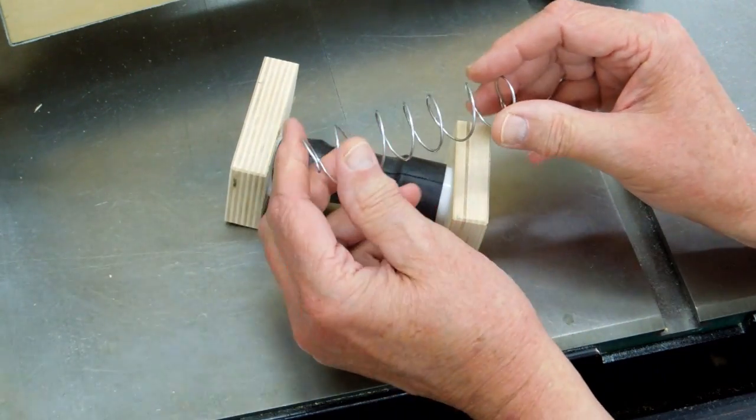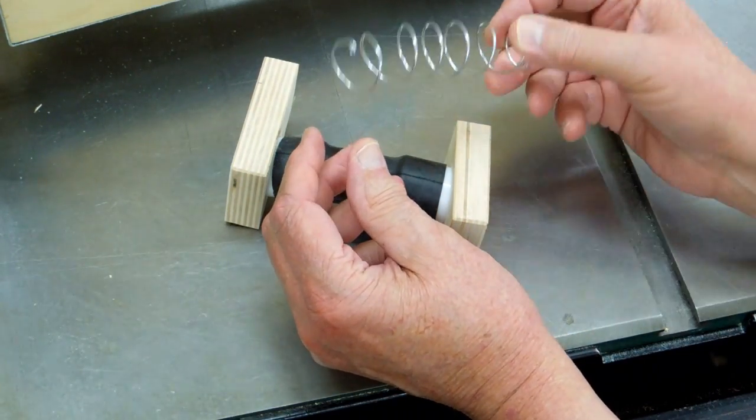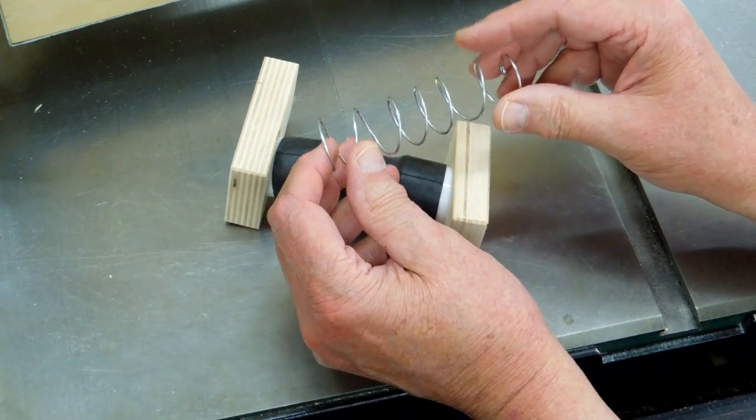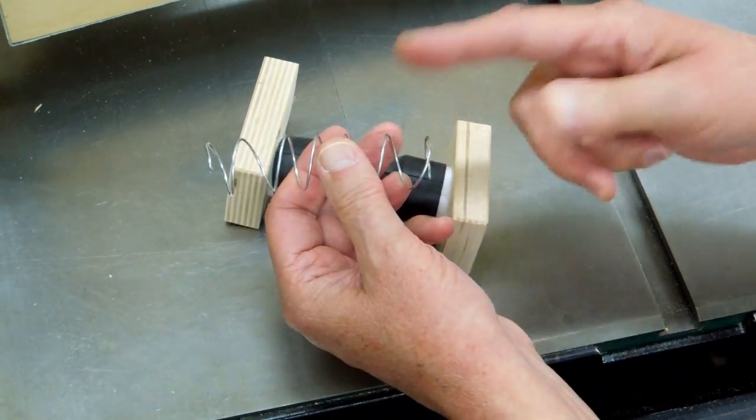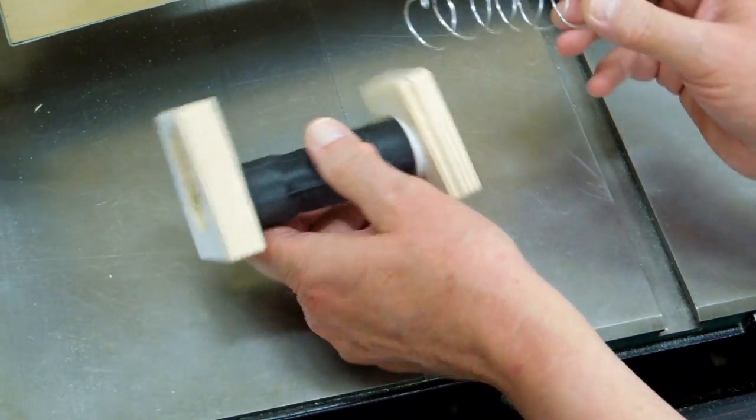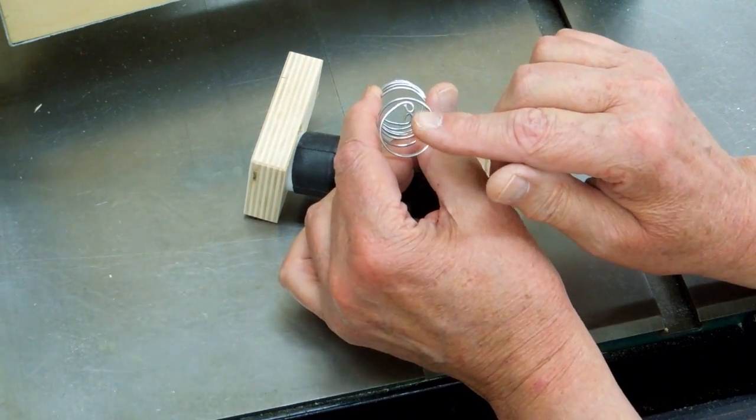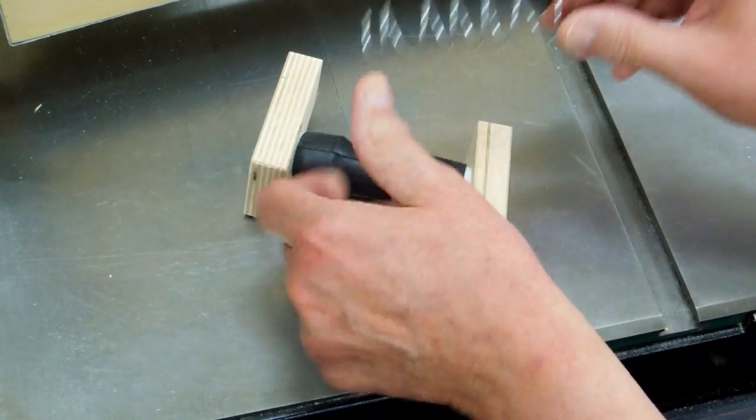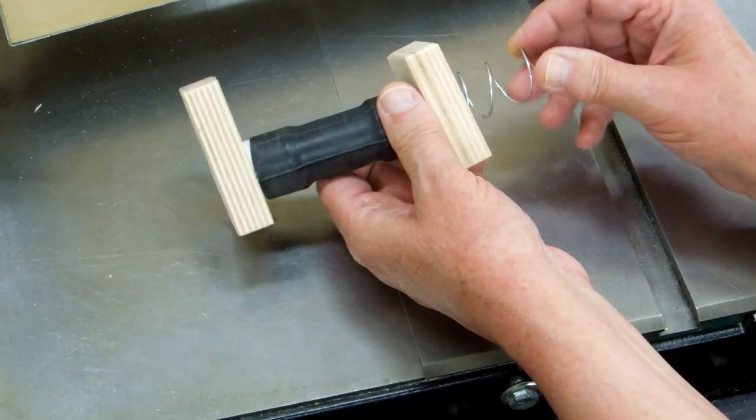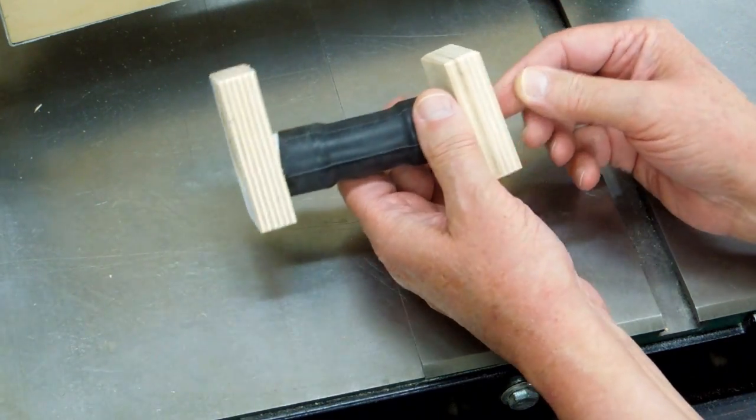I made a spring. This is 17 gauge galvanized electric fence wire and I wrapped that around a seven eighths inch wood dowel. I rounded the ends a little bit so I don't poke a hole in the inner tube. That just fits up inside there.